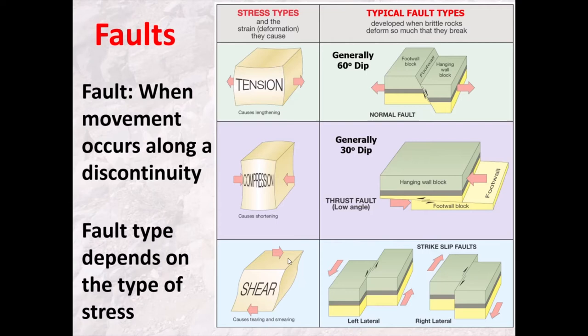The third type — shear faults — are where we move a portion of rock one way and the other portion the other way. We tend to form strike-slip faults, where rather than one block moving up or down relative to another, the two blocks move past each other laterally. Strike-slip faults tend to be vertical. So: normal faults have the hanging wall move down with a 60-degree dip; thrust faults have the hanging wall move up with a 30-degree dip; and strike-slip faults have lateral movement with vertical fault planes.